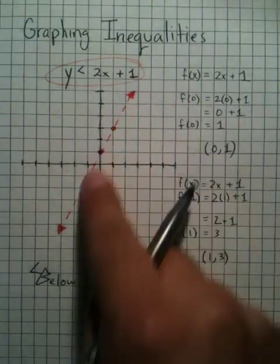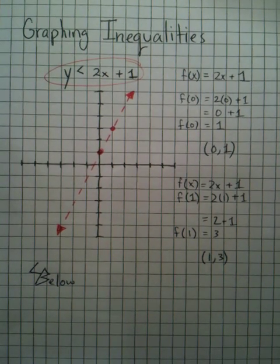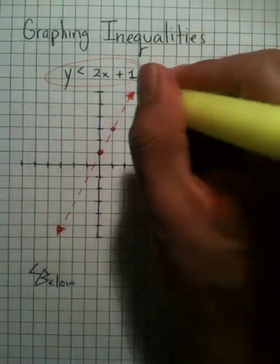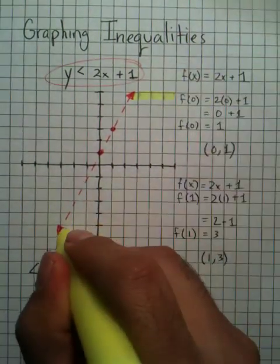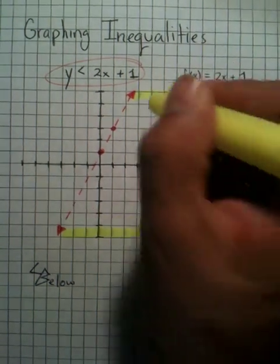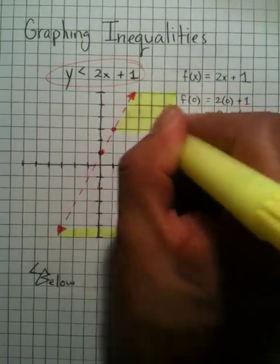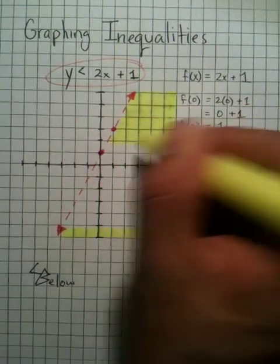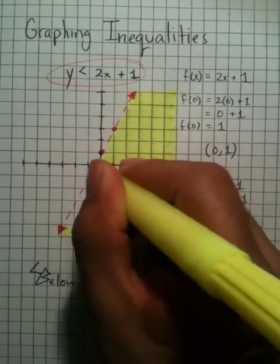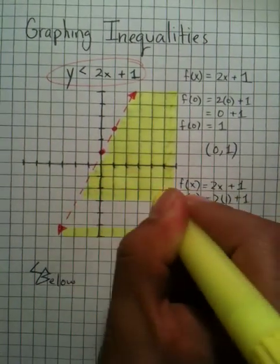So all this region below the dotted line gets shaded. Now, make your shading nice and neat. There's no reason for you to have really messy shades. A highlighter is the best way to shade graphs. And here you go. Just nice, clean. Now, if you don't have a highlighter, you can use the side of your pencil.